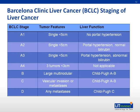Stage B represents a large multinodular tumor without vascular invasion or metastasis, along with Child-Pugh class A or B. Stage C represents a large multinodular tumor with vascular invasion or metastasis, also with a Child-Pugh class of A or B. Finally, stage D represents a large multinodular tumor with any invasion, represented by Child-Pugh class C.